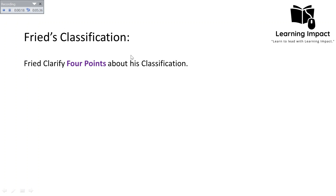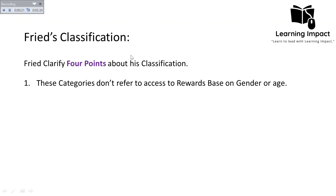Fried clarified four points about his classification. First, these categories do not refer to rewards based on gender or age. It means that societies classified as egalitarian — where there is rough equality — might still have discrimination on the basis of gender or age. Gender stratification and age-based stratification were excluded when Fried classified world societies into these three categories, meaning he did not consider these two factors.